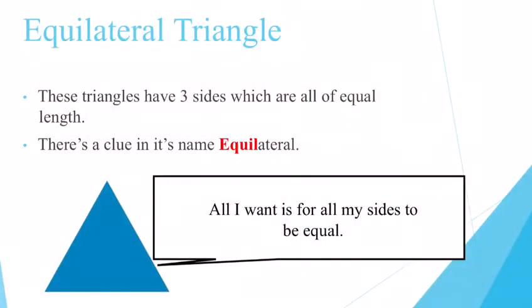Let's look at what triangles can be categorized as. The first type of triangle we have are equilateral triangles. These triangles have three sides which are all of equal length. The clue is in its name—I always think of the word 'equal' at the beginning of equilateral. All they want is for their sides to be equal.